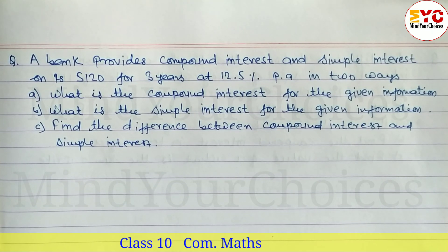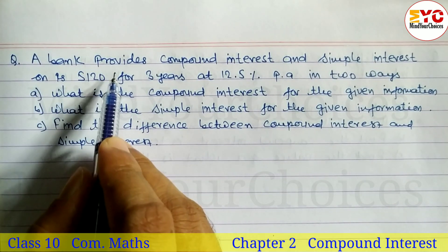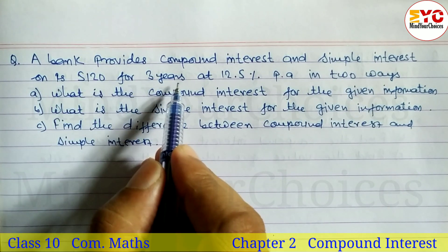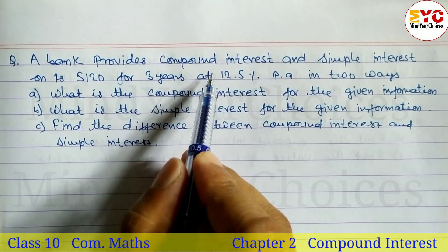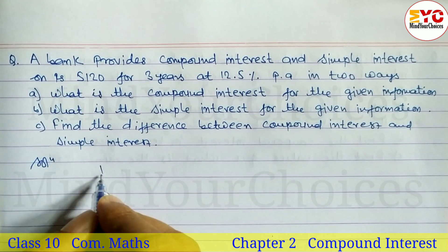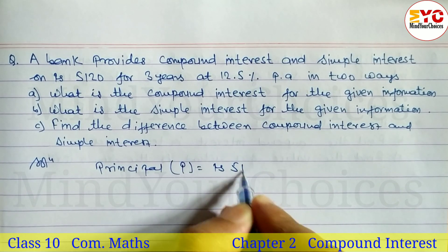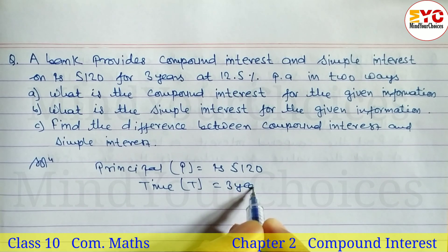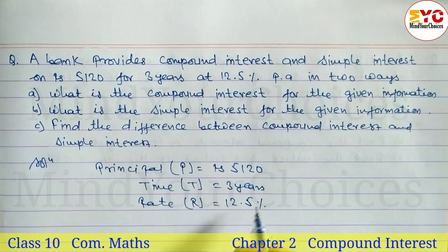Question in class 3 is compound interest, question 2. A bank provides compound interest and simple interest on Rs. 5,120 for 3 years at 12.5% in 2 ways. So let's take a start. Here we have to write down the principal. P is equal to Rs. 5,120. Time T is equal to 3 years. Rate R is equal to 12.5%.